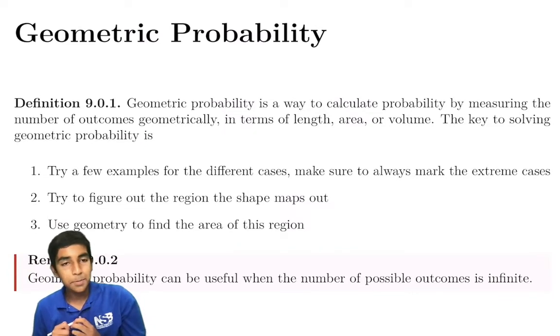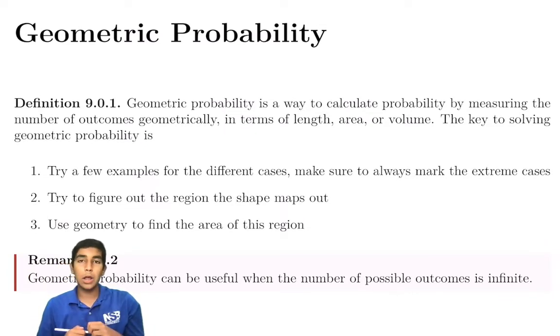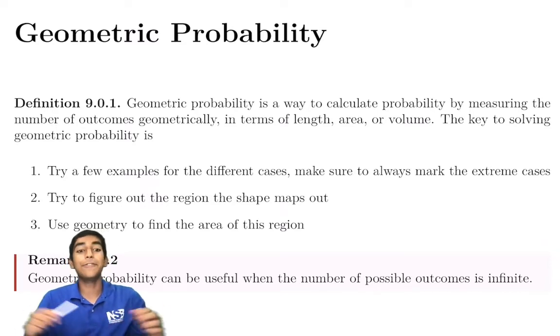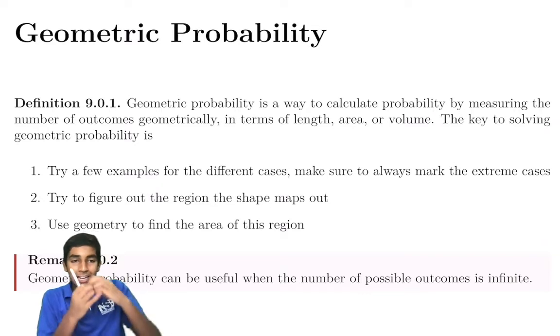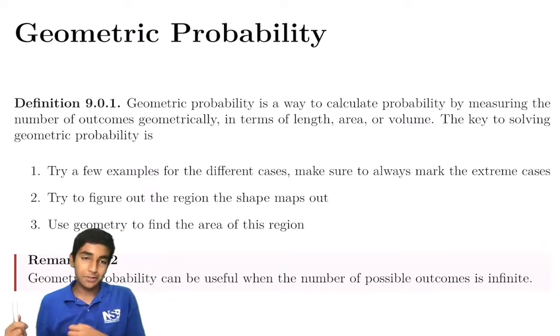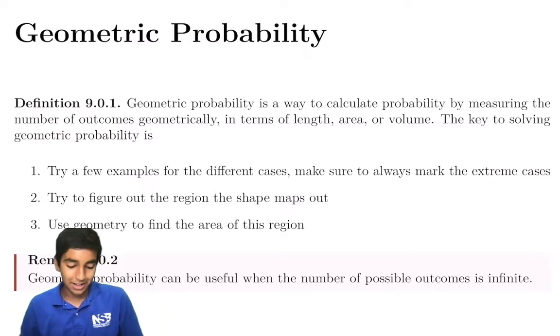So geometric probability, it's a way to calculate probability by measuring outcomes geometrically. And it's very useful when outcomes are infinite. Basically, taking infinite outcomes, you make a combo problem into a geo problem. That's basically what it is, except it gets a lot more complicated.